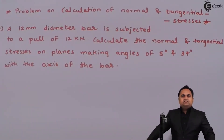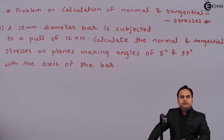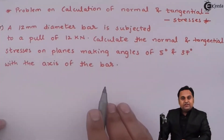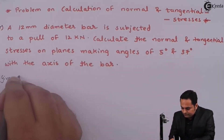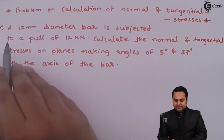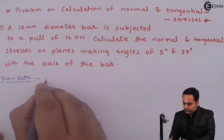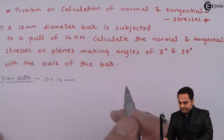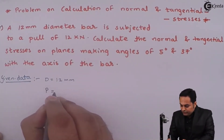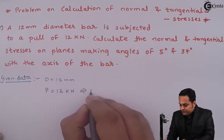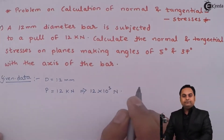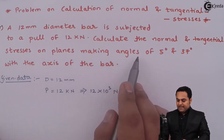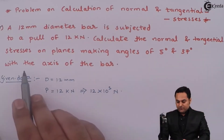In this video we will see a problem in which we are going to calculate normal stress and tangential stress. A 12 mm diameter bar is subjected to a pull of 12 kilonewton, that is 12 × 10³ Newton. We need to calculate the normal and tangential stresses on planes making angles of 5 degree and 37 degree with the axis of the bar.